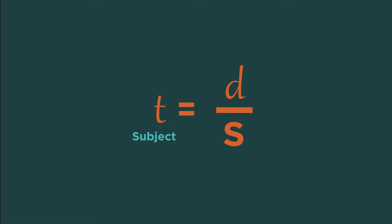We change the subject to make the unknown variable the subject. So with speed, distance and time, if we know the distance and speed but don't know the time, we want the formula to be t equals.